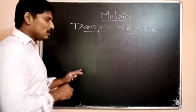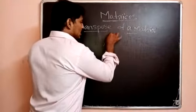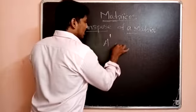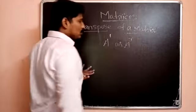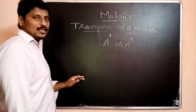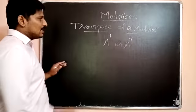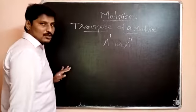The transpose of a matrix is denoted by A transpose. It is denoted as A^T or A prime. The transpose of a matrix A is written in this notation.